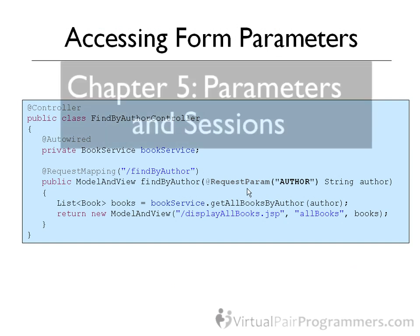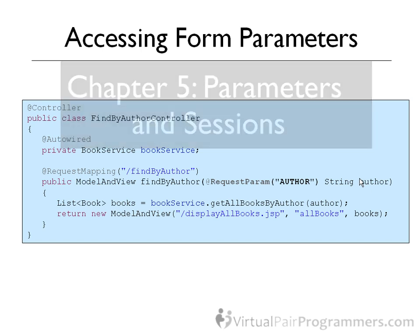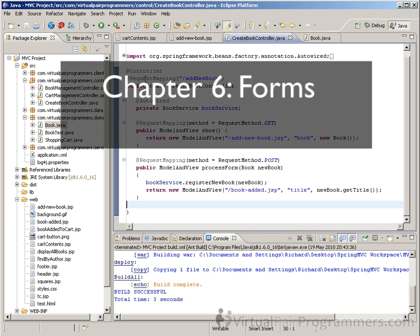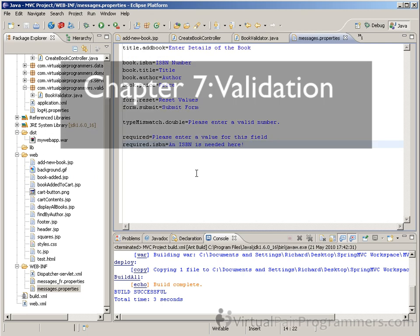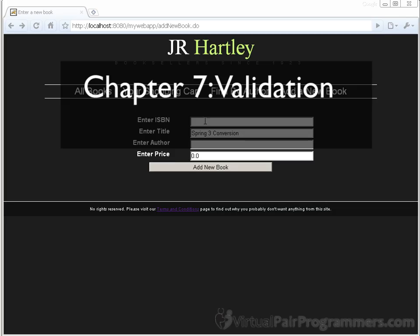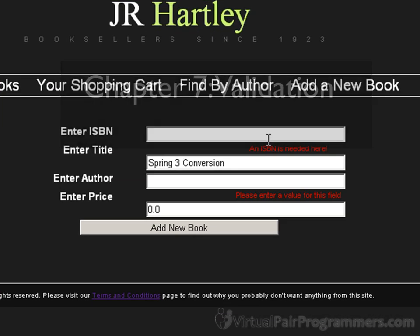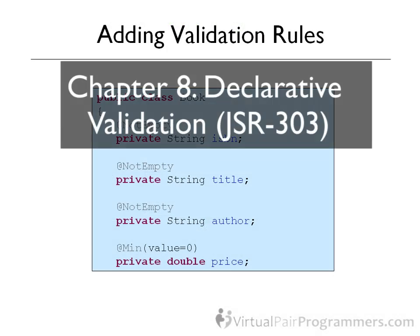In Chapter 5, the fundamental tasks of passing parameters and accessing sessions is covered in detail. In Chapter 6, we'll look at how to handle forms. Chapter 7 will be the first of two chapters covering validation — in this one, we'll be looking at manual validation. In Chapter 8, we'll cover the so-called declarative validation, otherwise known as JSR 303.